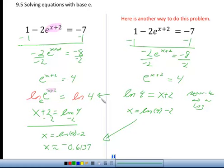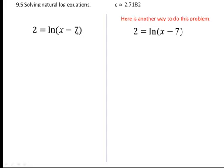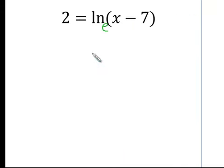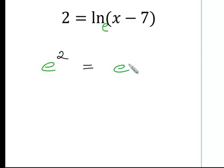Now we have an equation with the natural log in it. Remember, when you see ln, the base is e. The book's method is to rewrite the equation where both sides have base e — so raise both sides to base e, with everything becoming an exponent. This is valid as long as you do it to both sides.